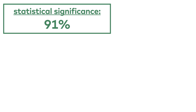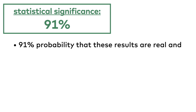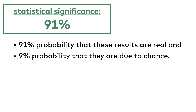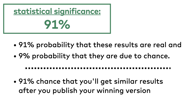What does it mean? Simply put, there is a 91% probability that these results are real, and a 9% probability that they are due to chance. To put it in business terms: there is a 91% chance that you will get similar results after you shut down the test and publish your winning version, and a 9% chance that you will get worse results — in some cases worse than your original version.